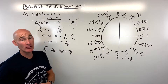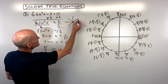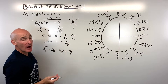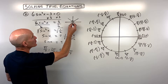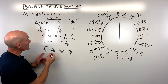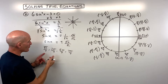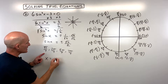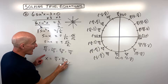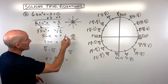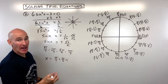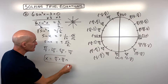For the general solution, notice that going from pi over four to three pi over four, you're adding pi over two — 90 degrees — and the same each time after that. So you can say x equals pi over four plus pi over two times n, where n is an integer. You're just adding 90 degrees each time to get to the next point on the unit circle. This is your general solution.